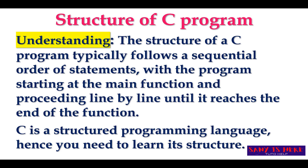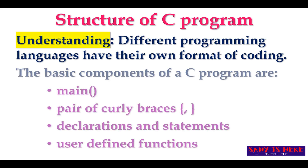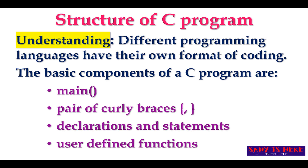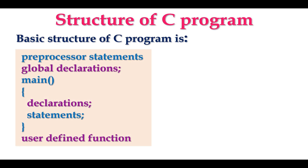C is a structured programming language, hence we need to learn its structure. Different programming languages have their own way of coding, and C has its own way of writing code. The basic components of a C program include the main function, braces (brackets), declarations, statements which indicate the operations you are performing, and user-defined functions if required.